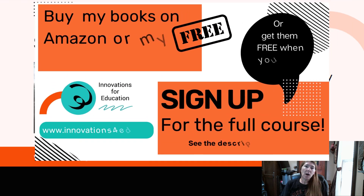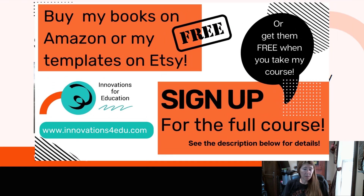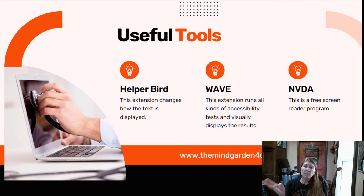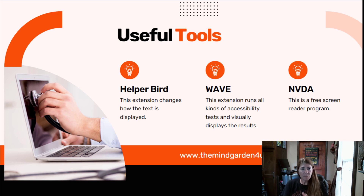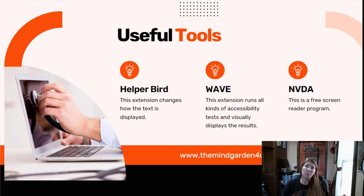In this video we're going to look at some assistive technologies you can use to help you test your course for accessibility. We're going to look at three main tools: Helper Bird is a Chrome extension that changes how text is displayed, showing why accessible text is so important. The WAVE extension runs a single course page through a variety of tests and visually presents that information. NVDA is the screen reader program we're going to use to test for screen reader accessibility.